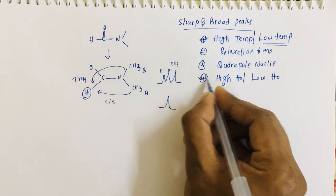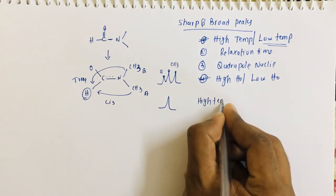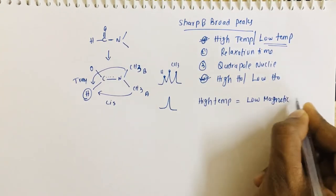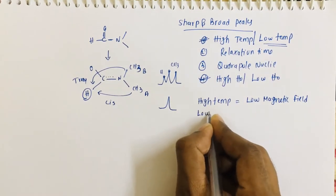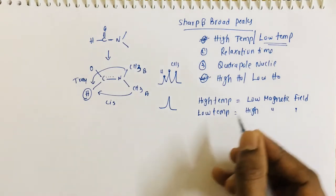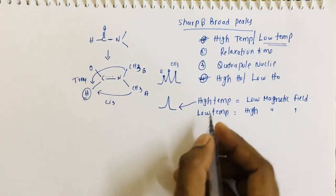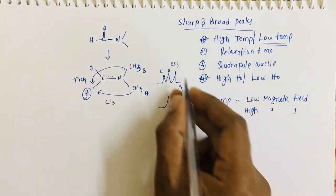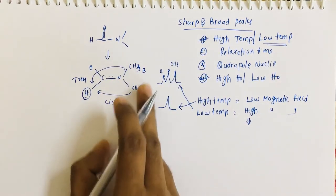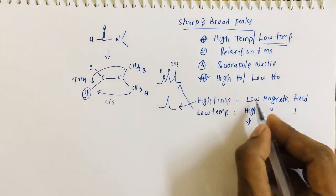Now we talk about high magnetic field and low magnetic field. High temperature equals low magnetic field, and low temperature equals high magnetic field. At low magnetic field we get an average singlet, and at high magnetic field we get a three-line signal. At high magnetic field the rotation is avoided — the molecule cannot rotate and there cannot be exchange of the methyl groups.